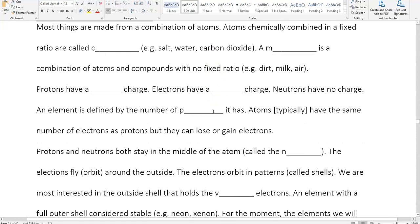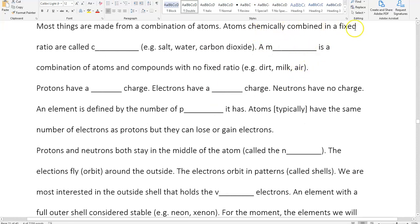Most things are made of combinations of atoms, and atoms chemically fixed in a ratio are called compounds. So we have examples like salt, water, and carbon dioxide. Salt is sodium chloride, written NaCl, water which is H2O, and carbon dioxide which is CO2. A mixture is a combination of atoms and or compounds with no fixed ratio. So dirt, milk, air, seawater, they're all mixtures.